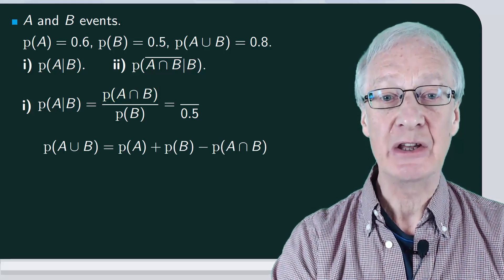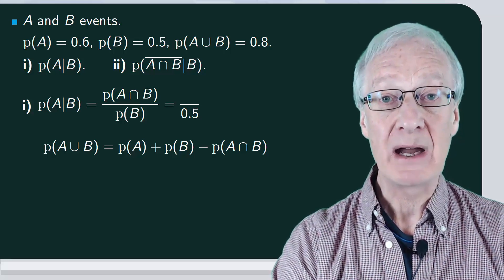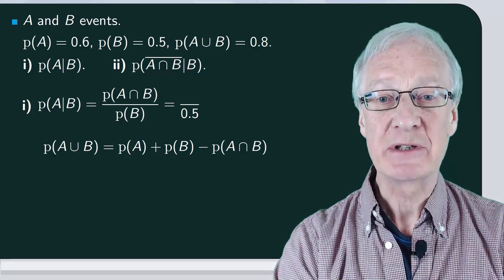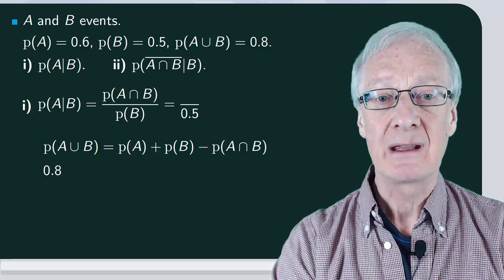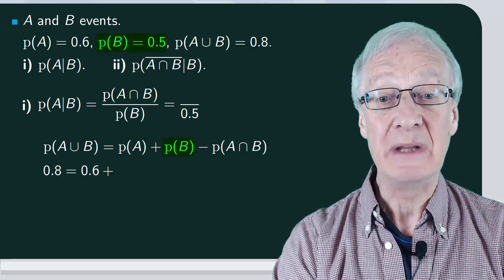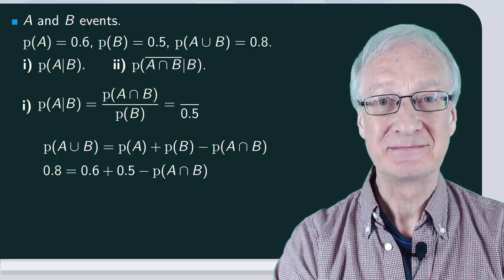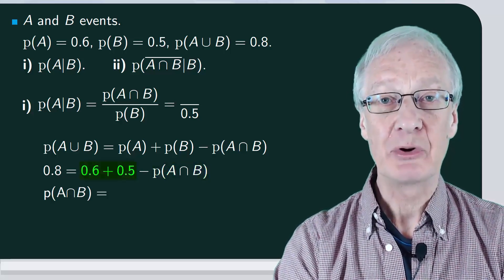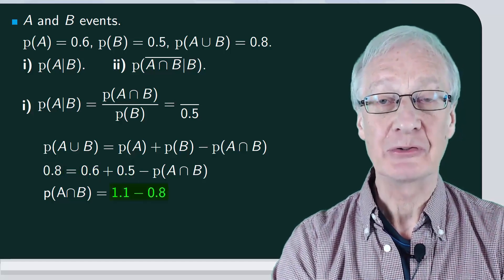The probability of A union B is the probability of A plus the probability of B minus the probability of A intersection B. Substituting: the probability of A is 0.6, plus the probability of B which is 0.5, minus the probability of the intersection. From here, we get that the probability of the intersection is 0.6 plus 0.5, which is 1.1, minus 0.8.